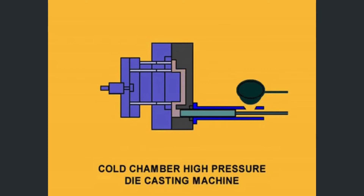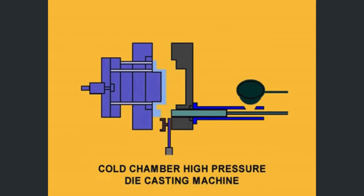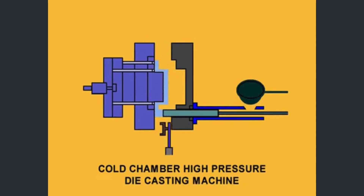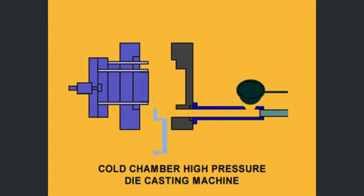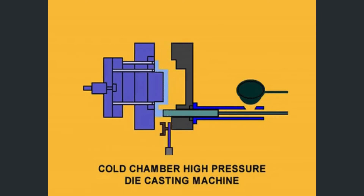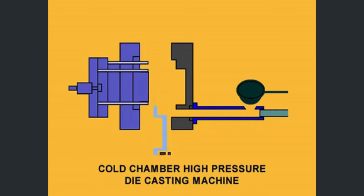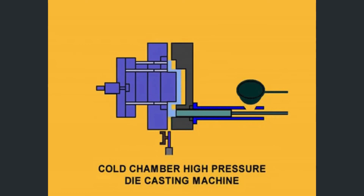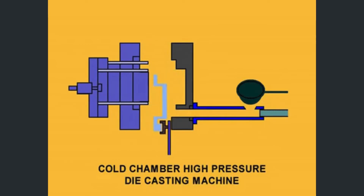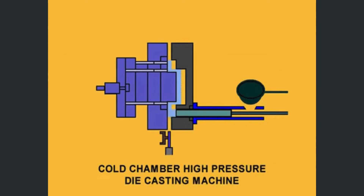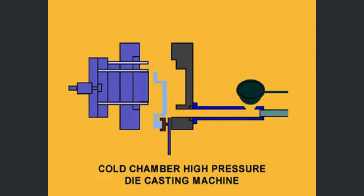The second subtype is cold chamber die casting, in which high melting point metals are used. The molten metal is brought from an external furnace and poured into the molds. Unlike hot chamber die casting, it does not have a built-in furnace, and an external force exerted by a plunger is used to force the liquid metal into the mold. Materials used include aluminium, copper, and brass.